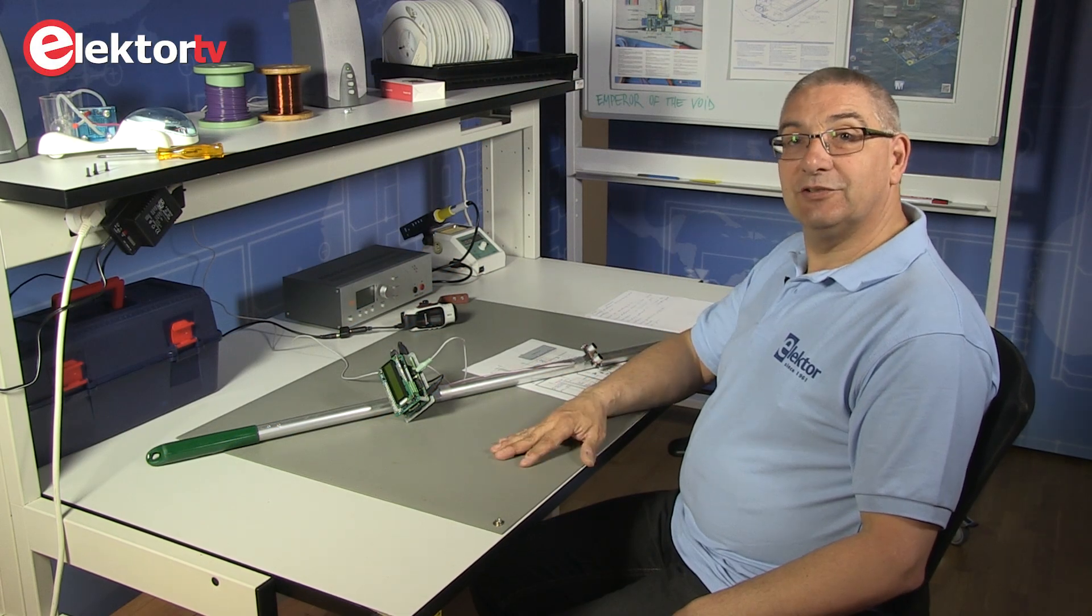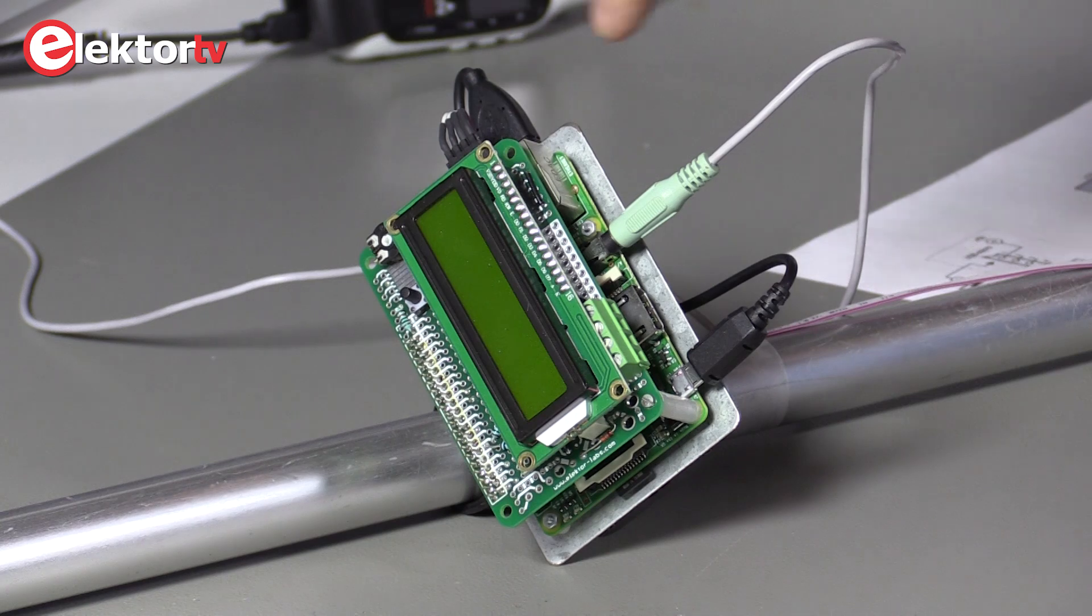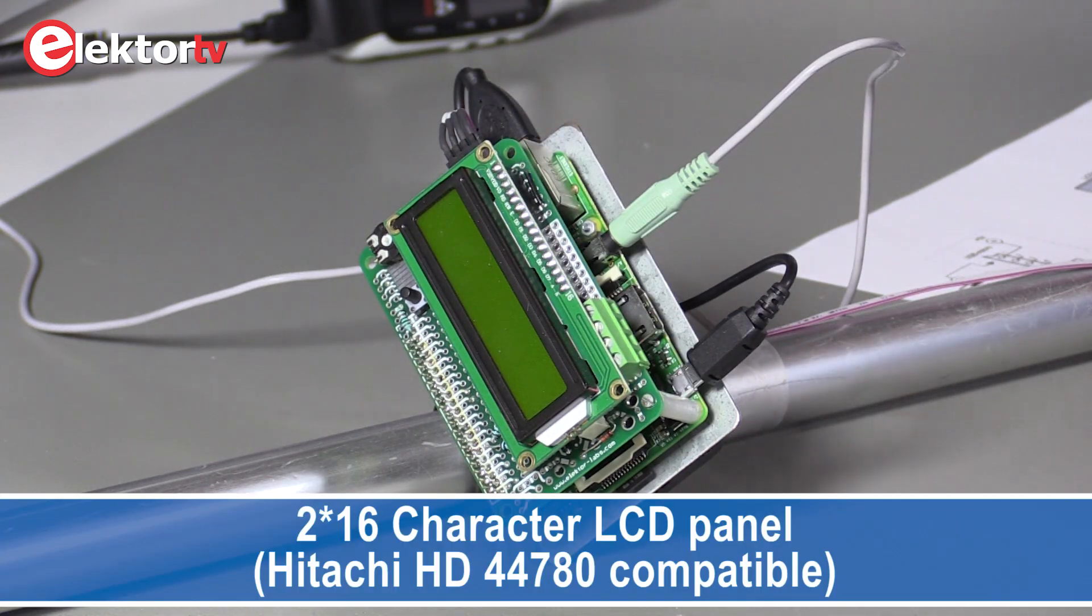We have just seen the testing of this device. Now I want to fill you in about some details about our distance measuring robot. As you can see here, the device. There's a display on it, which is optional.